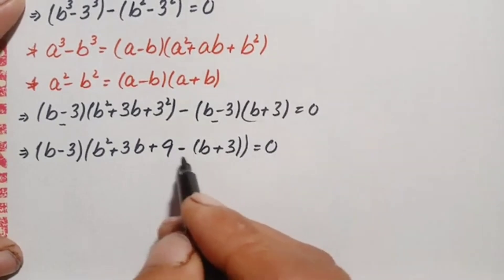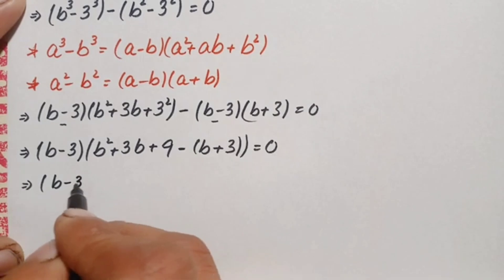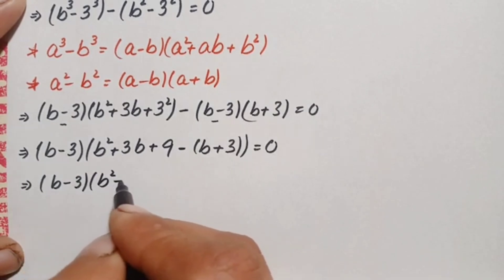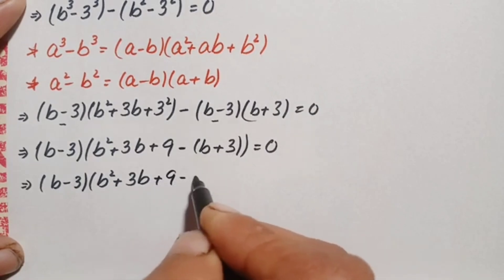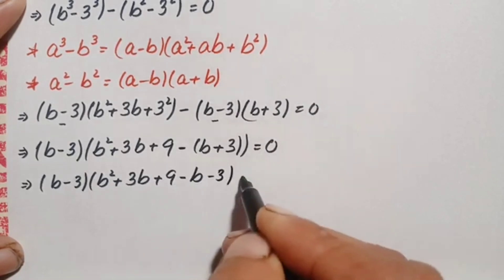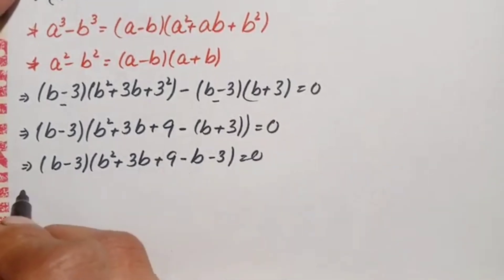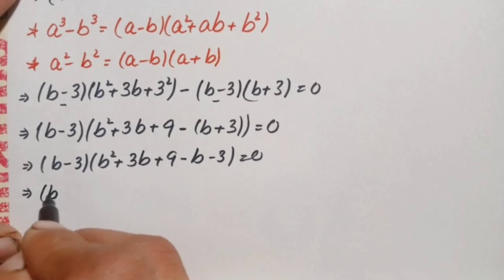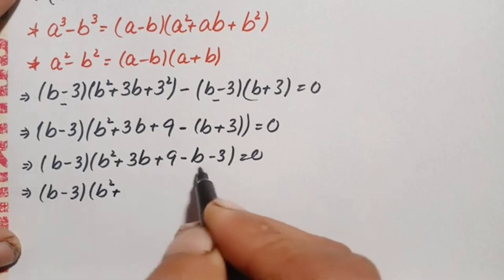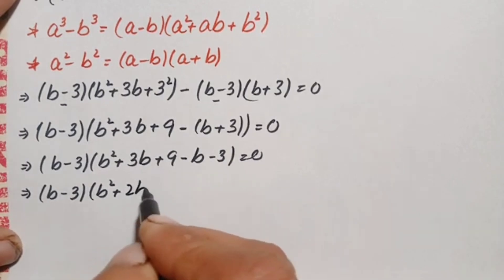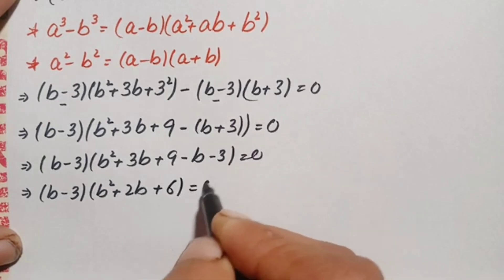We take (b minus 3) as the common factor. After factoring out and distributing the negative sign inside the parenthesis, we get: (b minus 3)(b squared plus 3b plus 9 minus b minus 3) equals 0, which simplifies to (b minus 3)(b squared + 2b + 6) equals 0.